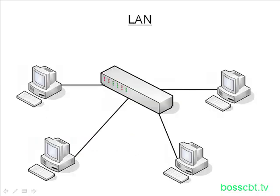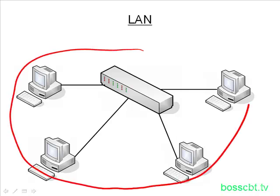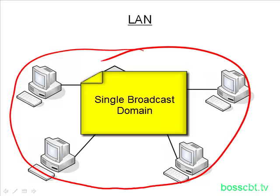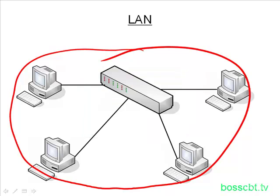This is our local area network — we have a switch with four PCs. Recall that a switch by default will forward a broadcast frame, just like a bridge and just like a hub. So here we have one broadcast domain. All of the broadcast packets sourced from any of these PCs will be sent to every other PC. We use up bandwidth, we use up resources on each PC to process the broadcast frame, and we also use up resources on the switch.